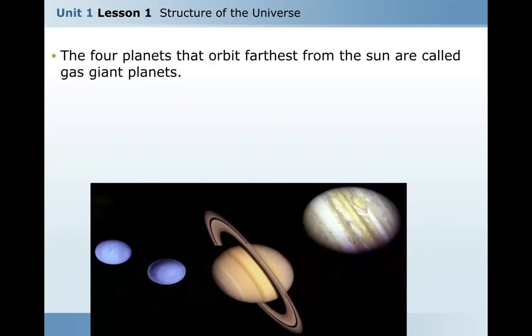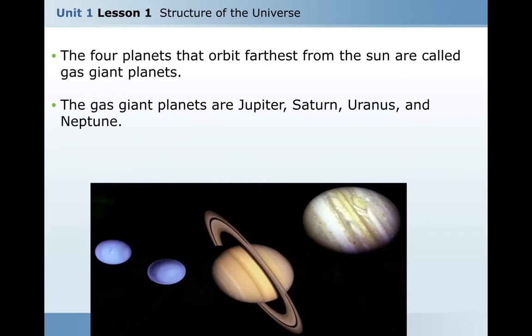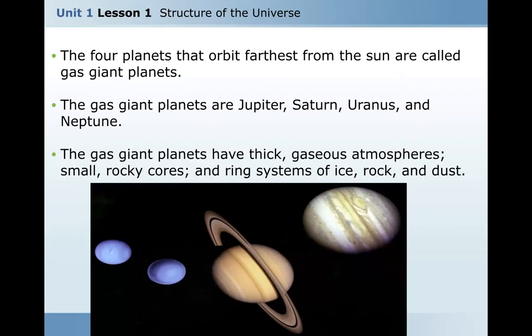The four planets that orbit furthest from the sun are called gas giants: Jupiter, Saturn, Uranus, and Neptune. The gas giant planets have thick gaseous atmospheres, small rocky cores, and a ring system of ice, rock, and dust.